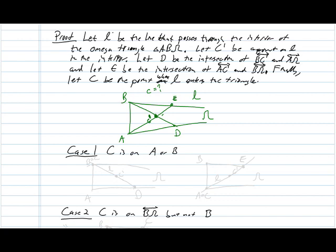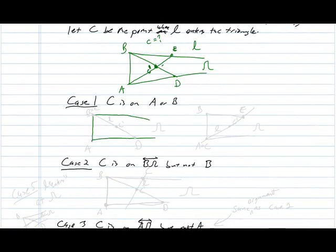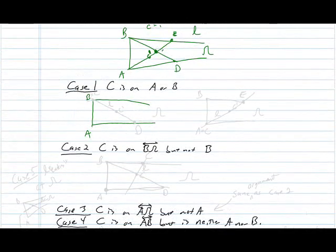We're going to talk about the different cases, what could happen where C is on various locations on this triangle. So our first case is where C is actually either the vertex A or the vertex B. In this case, if C equals B and we have C prime in here, then our line L is going to enter at the vertex B and exit at the point D that we defined above. So it entered at a vertex and exited at the opposite side.